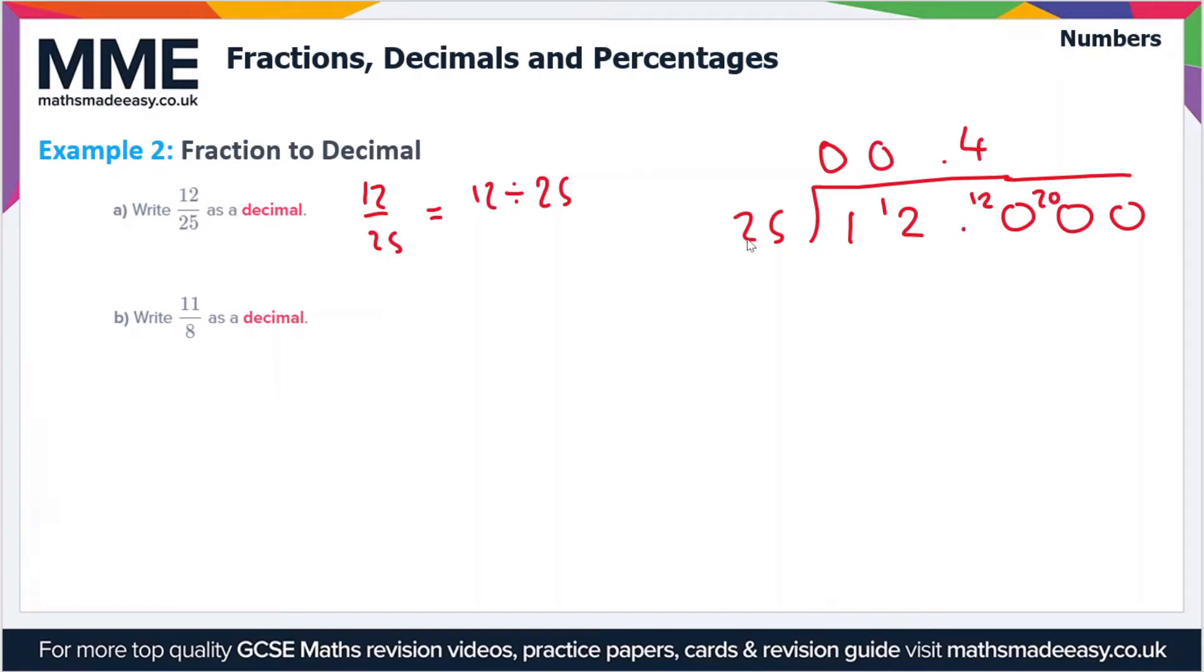And then we're left with 20 as a remainder. So 4 times 25 is 100, so 120 minus 100 is 20. And then finally we have how many times does 25 go into 200? The answer is 8 and there's no remainder. So our answer is 0.48.